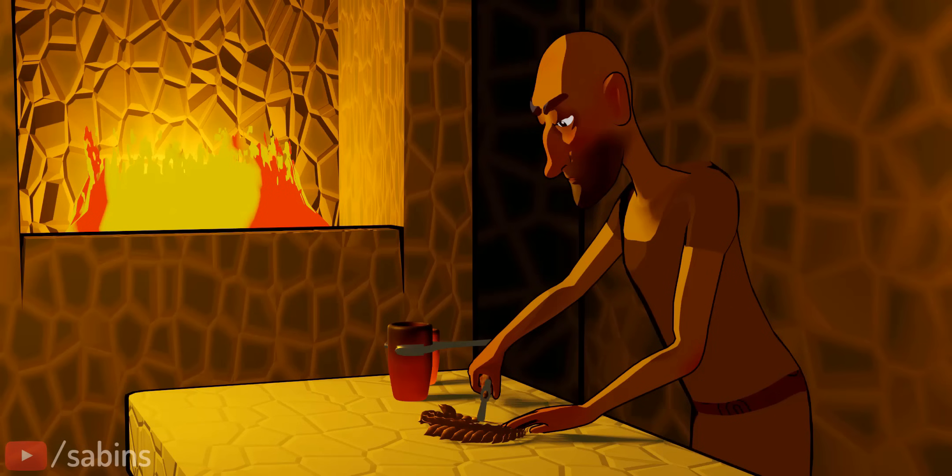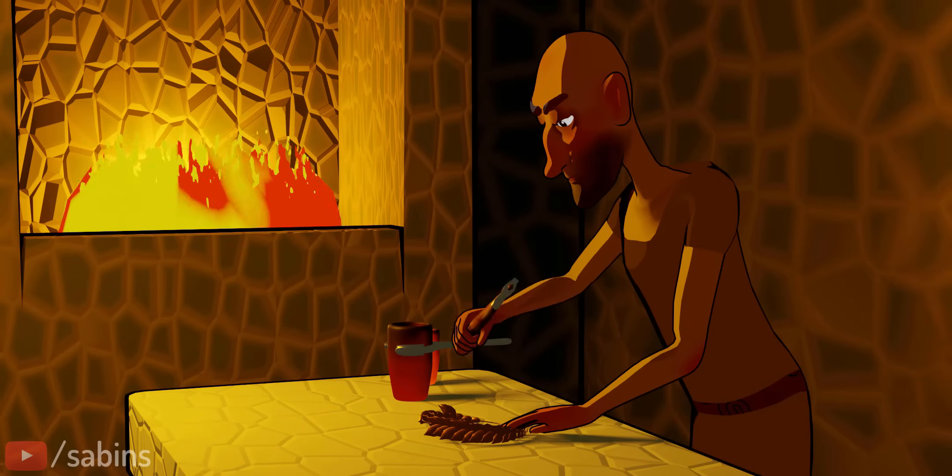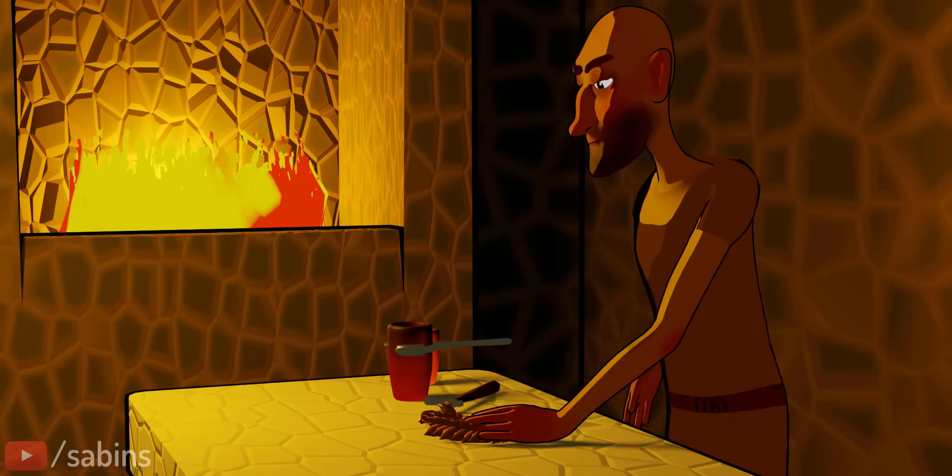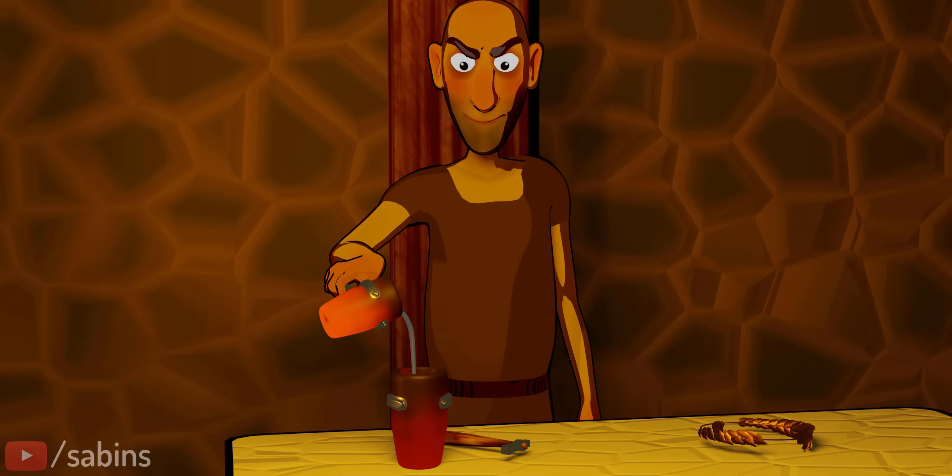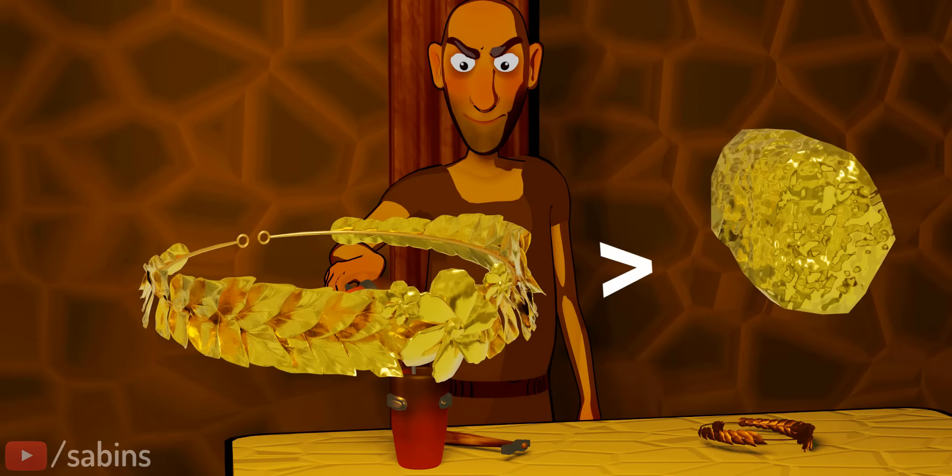Now, let's see how Archimedes solved the crown problem using his new principle. If the goldsmith had mixed silver, which is a lighter metal than gold, into the crown, its volume would be more than a pure gold lump of the same mass.